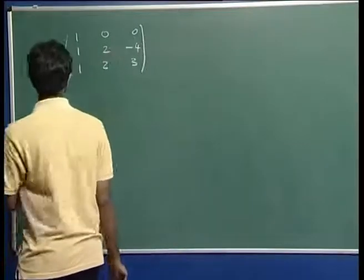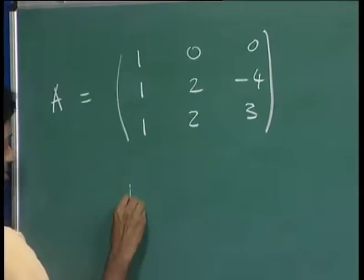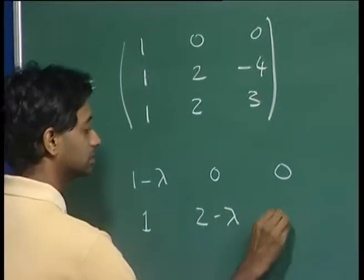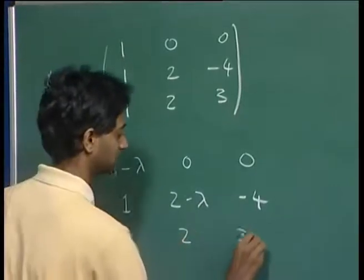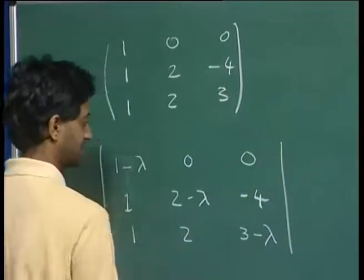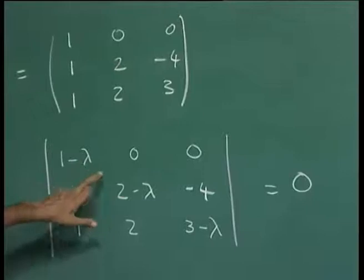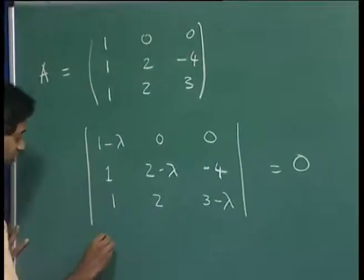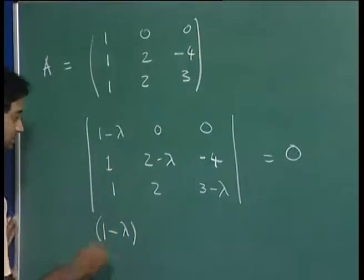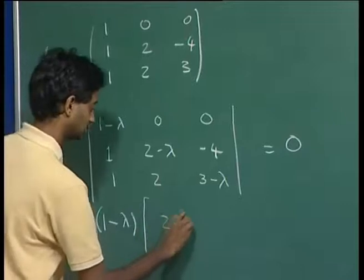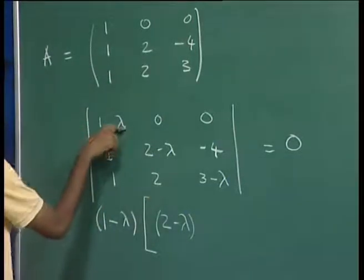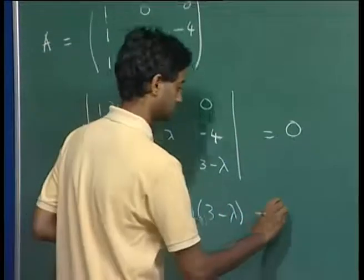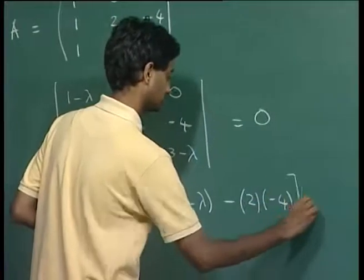In order to calculate the eigenvalues, what we said is that we replace the diagonal elements by the corresponding element minus lambda, leave the off-diagonal elements as they are, and we take the determinant of this matrix and set it equal to 0. When we solve this, we get a cubic equation in lambda, and the determinant will have only one contributing term: (2 minus lambda)(3 minus lambda) minus 2 times minus 4 times 0.